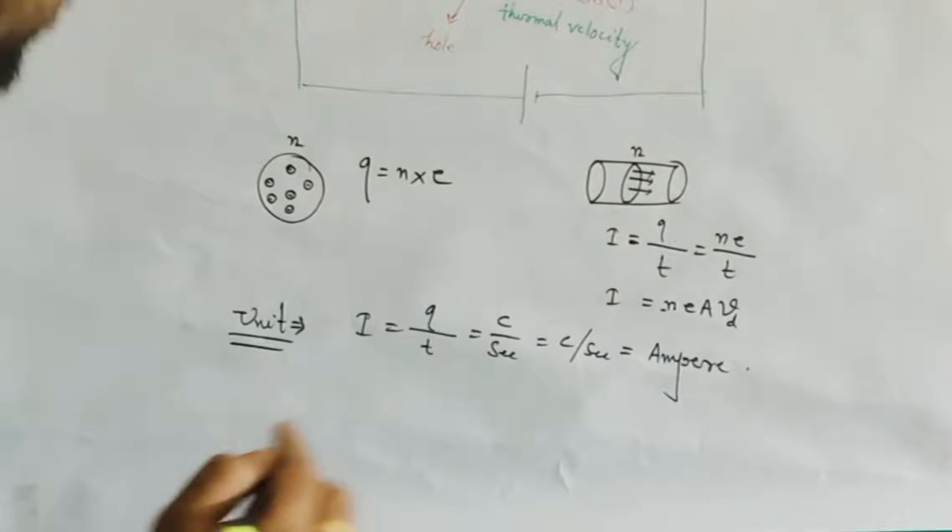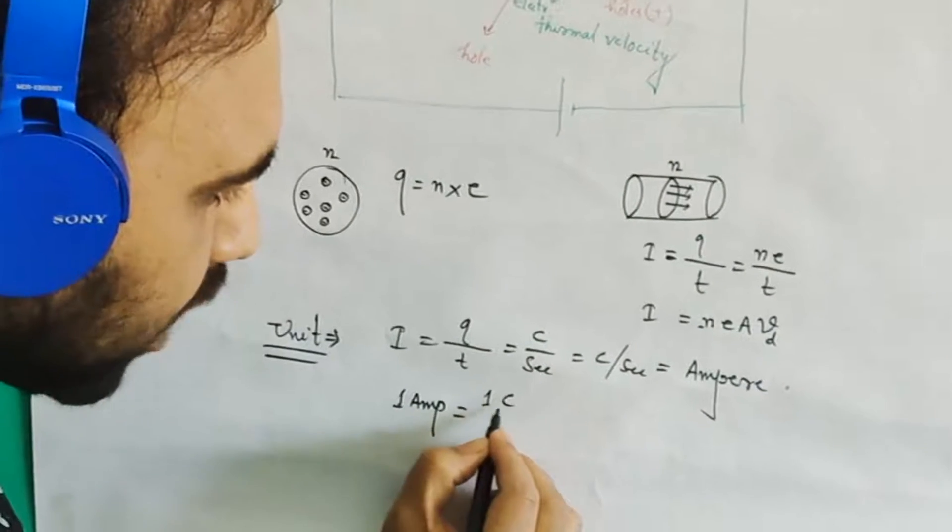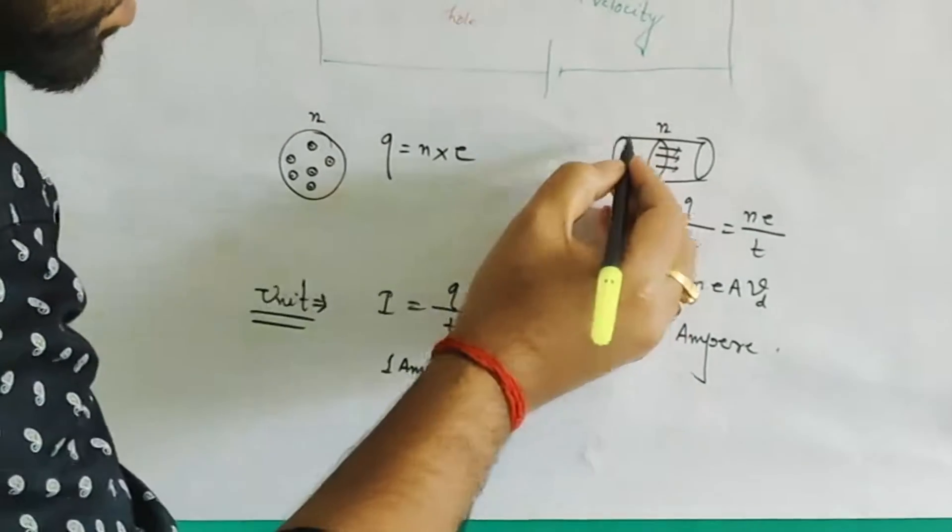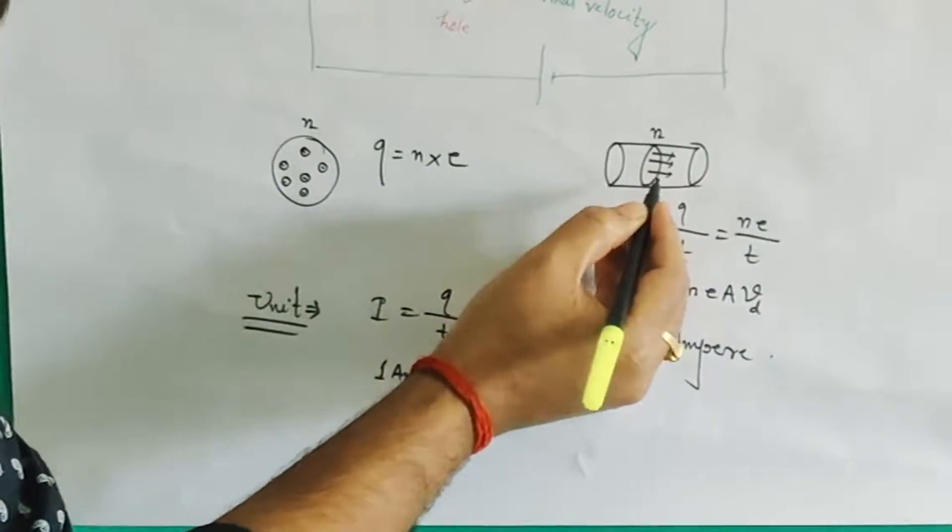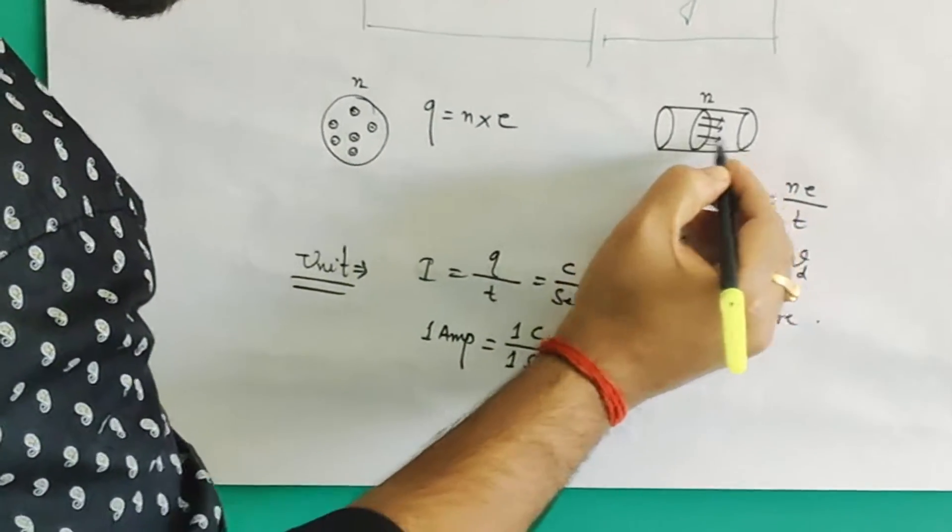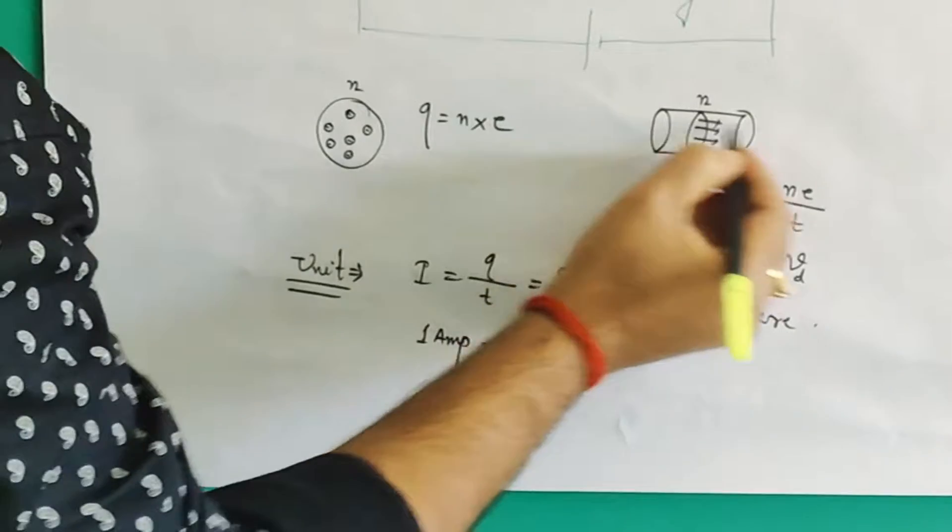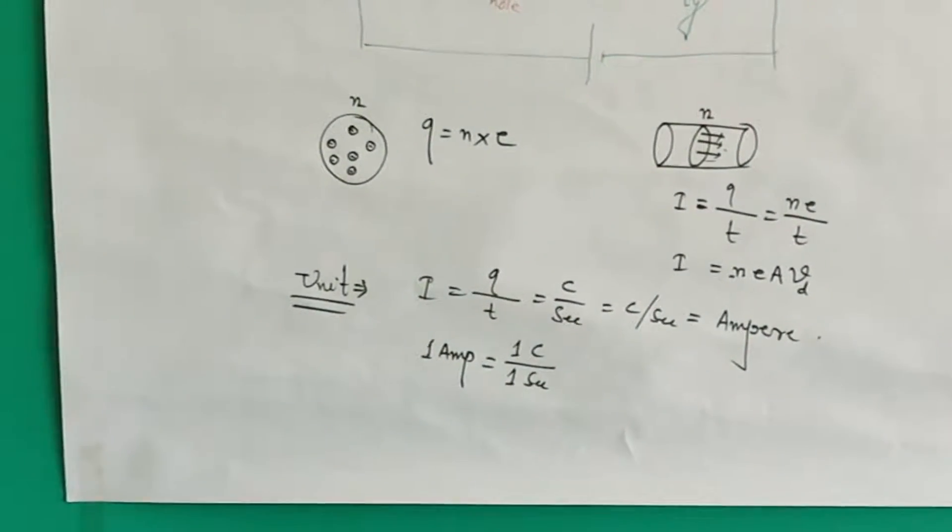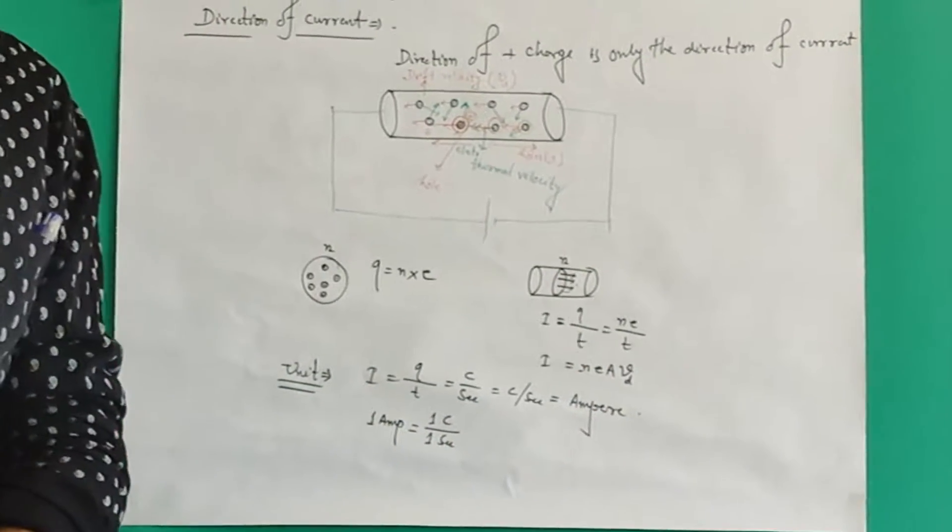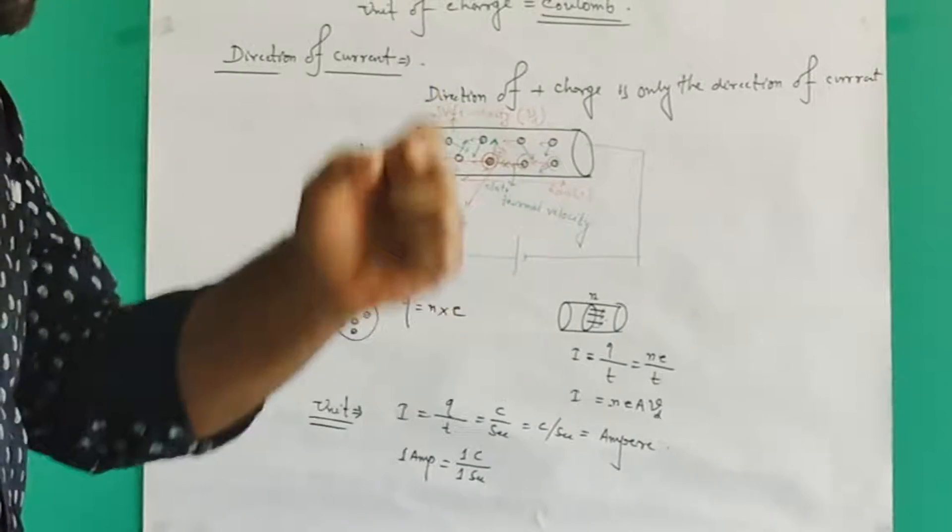What will be the definition of one ampere? One ampere equals one coulomb per one second. If we consider a wire, if one coulomb of charge is flowing within a time interval of one second, then the current flowing through the wire will be one ampere.